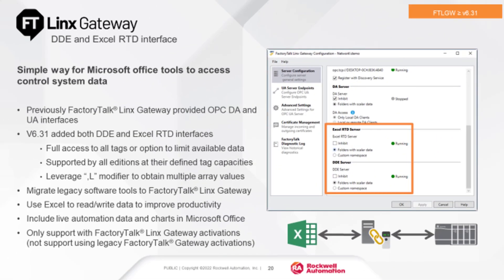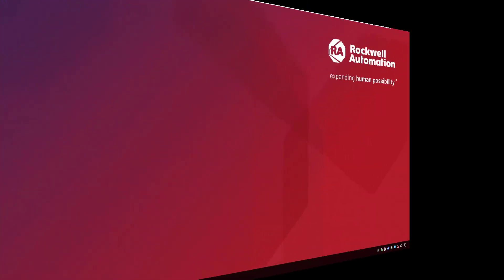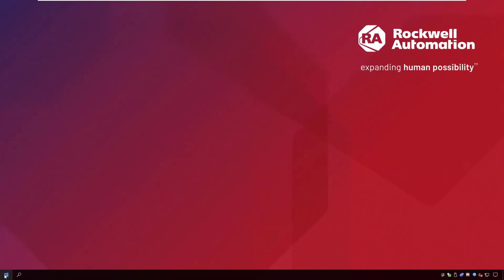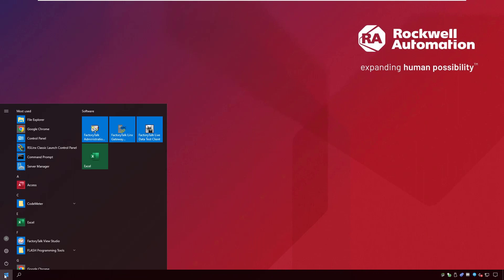There are two options for Excel RTD and DDE: Folders with Scalar and Custom Namespace. Folder with Scalar uploads the entire namespace from the data servers. Custom Namespace only uploads tags listed in the custom configuration. The number of tags in the namespace will affect the Factory Talk Links Gateway activation.